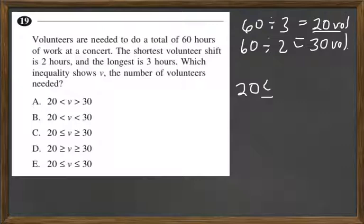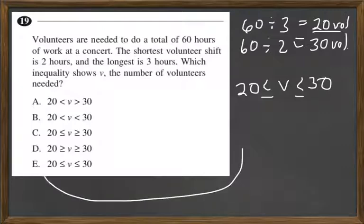So our volunteers are going to be here — that's going to be less than or equal to 30. We find an option that looks like that, and it would be E.